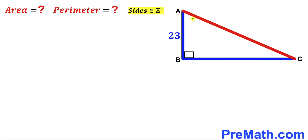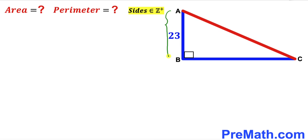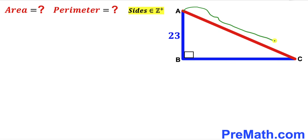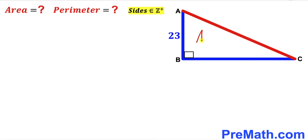Welcome to Pre-Math. In this video we have a right triangle ABC such that side length AB is 23 units, whereas side BC length is unknown and likewise hypotenuse AC length is unknown as well. Bear in mind that all these side lengths are positive integers, and our task is to calculate the area and the perimeter of this triangle ABC.